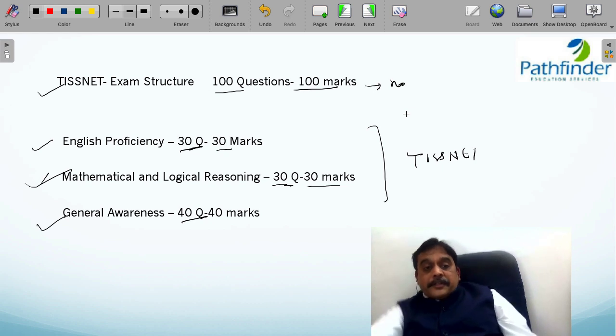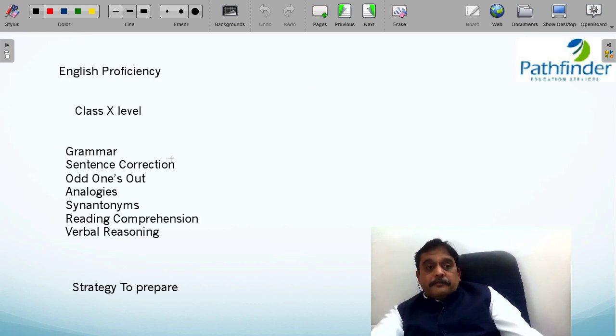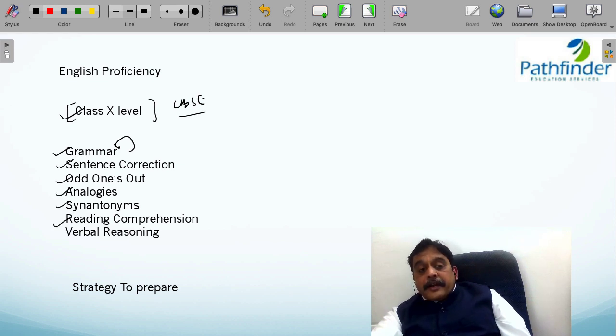Let us take a look at the first section: English proficiency. Very clearly mentioned on the website is that the English they expect is at class 10th level, and I believe class 10th level of CBSE. What kind of questions have appeared in previous years? I have seen papers and have been following TISS for some years now. I have seen questions based on grammar, sentence correction which is nothing but grammar, odd ones out, analogies, synonyms and antonyms, reading comprehension, and verbal reasoning. All these things are a part of the test.